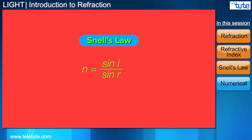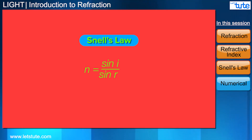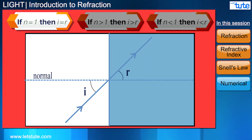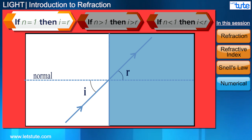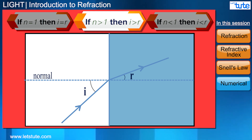To find how the angle of refraction changes with the refractive index, let's do a little bit of math. From Snell's law, if we take the sine of the angle of refraction to the other side, we get this. Now if the refractive index is 1, then the angle of refraction is just the angle of incidence. If the refractive index is greater than 1, then the angle of refraction becomes less than the angle of incidence.